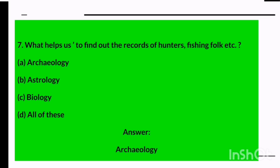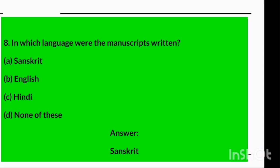Question seven: What helps us find out the records of hunters, fishing folk, etc.? Options are archaeology, astrology, biology, or all of these. The answer is archaeology — archaeology helps us find out the records of hunters, fishing folk, etc.